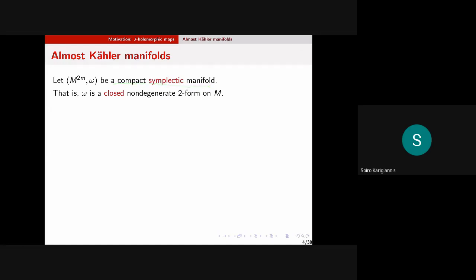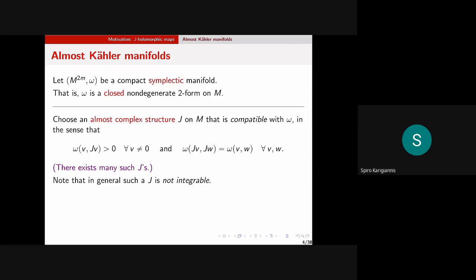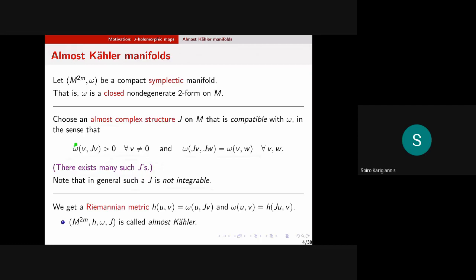Since most of you know about G-structures on manifolds, I'll go through this quickly. Let's start with a compact symplectic manifold: omega is a symplectic form and J is a compatible almost complex structure, meaning J is tamed by omega and they're compatible in the standard sense. Of course there are lots of such almost complex structures given a fixed symplectic structure, and almost all of them are not going to be integrable, so we don't need to talk about integrability of J.